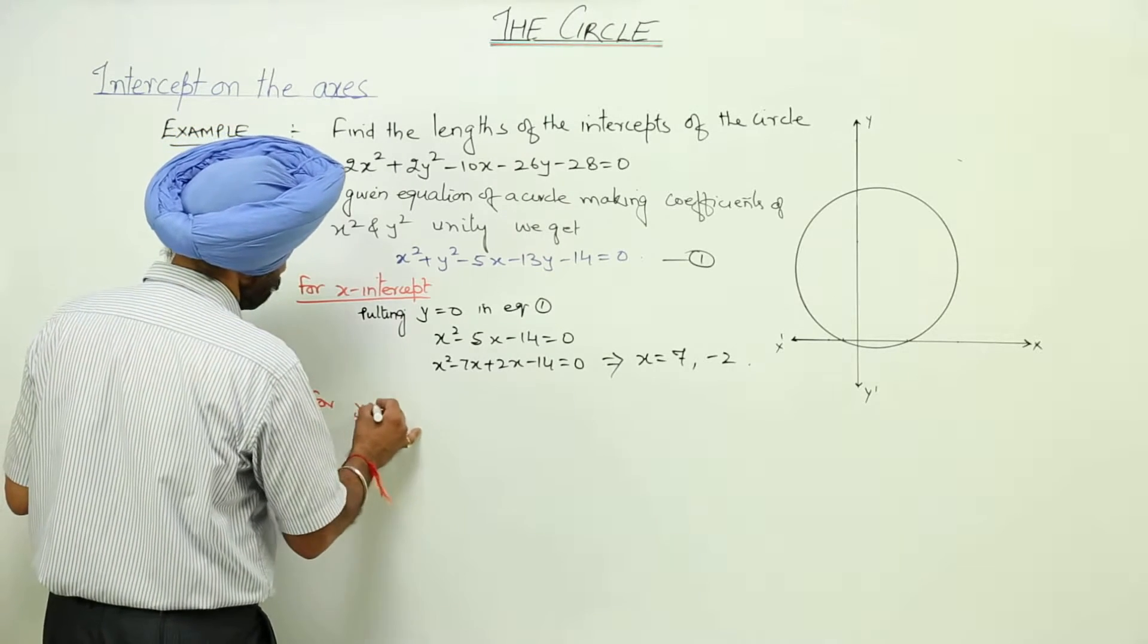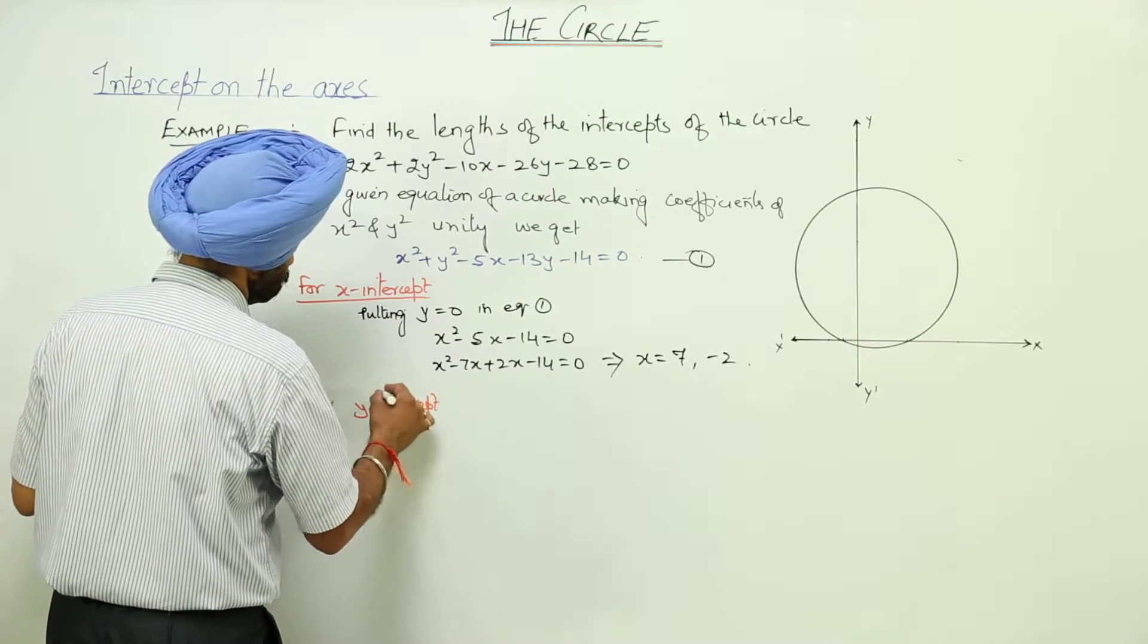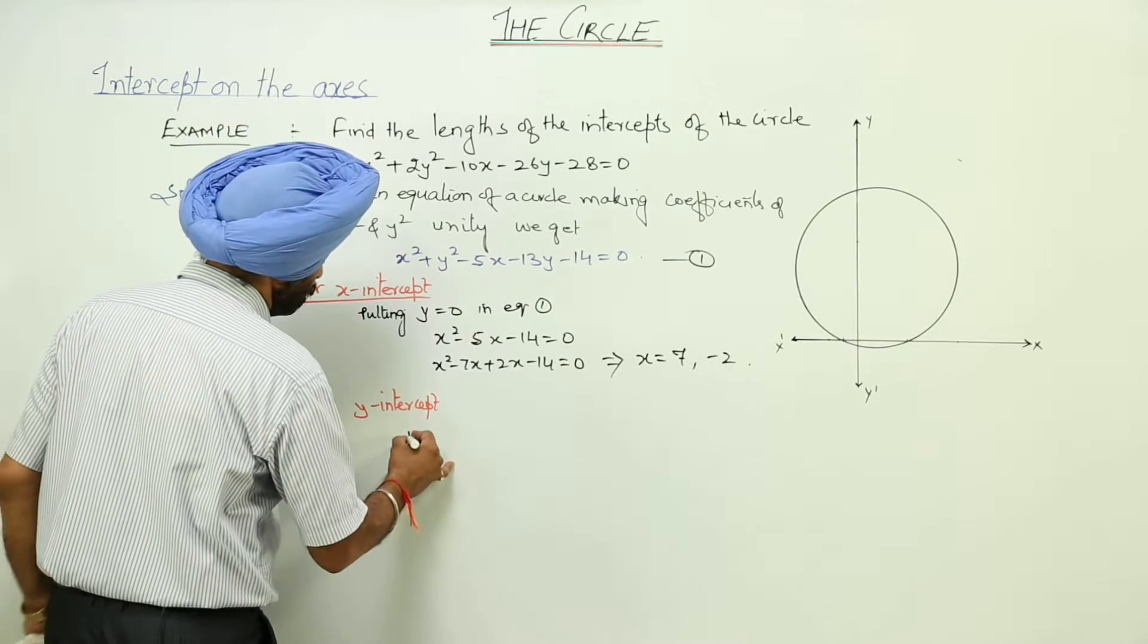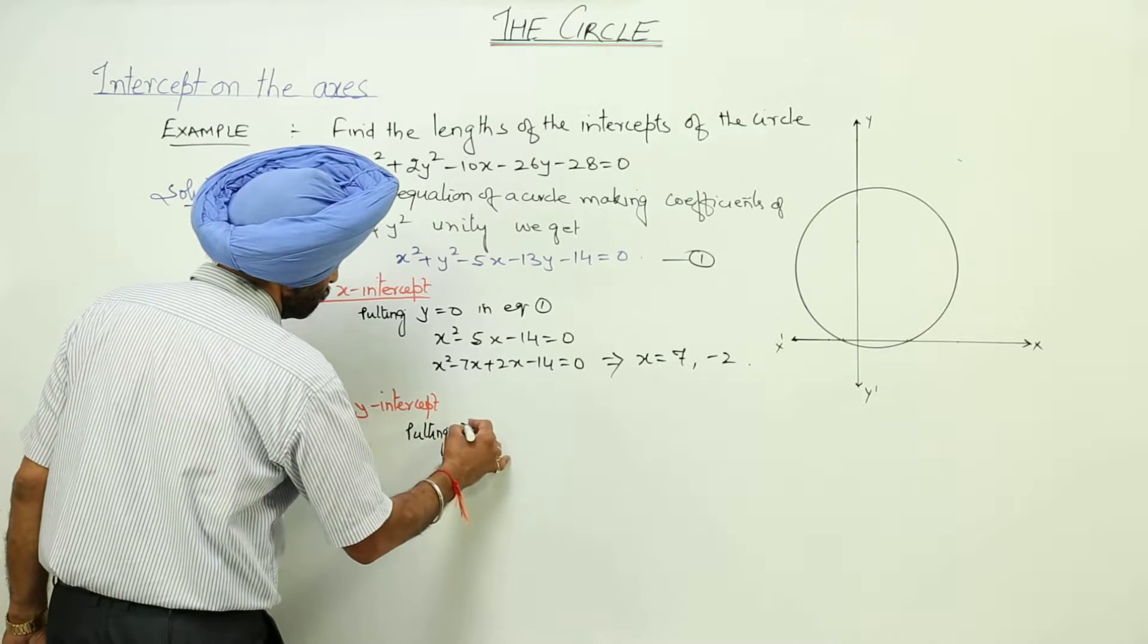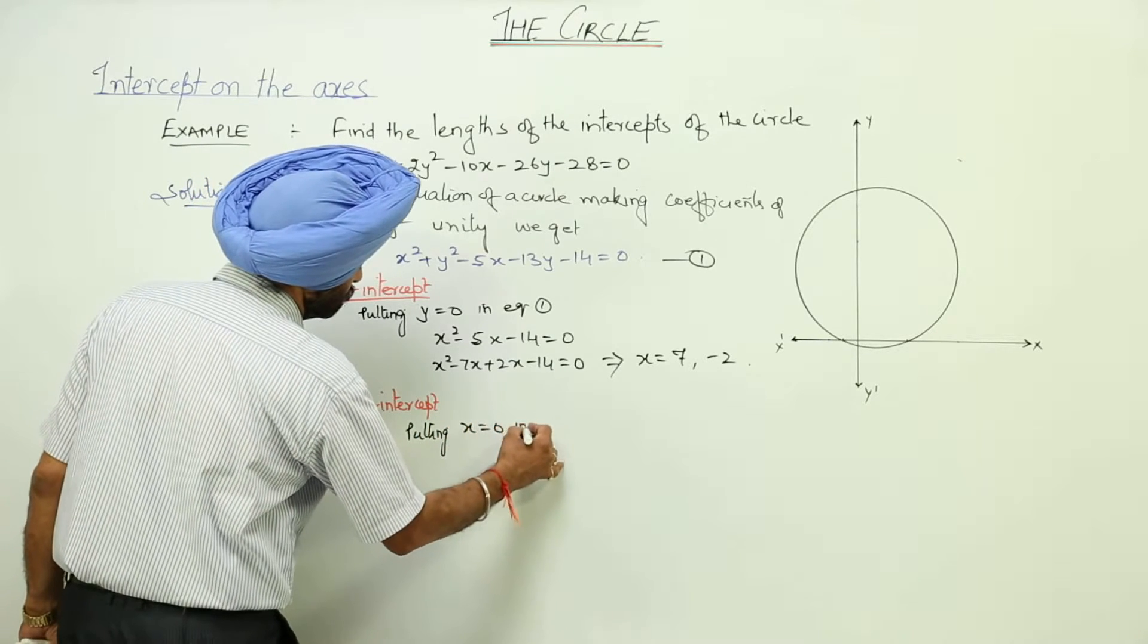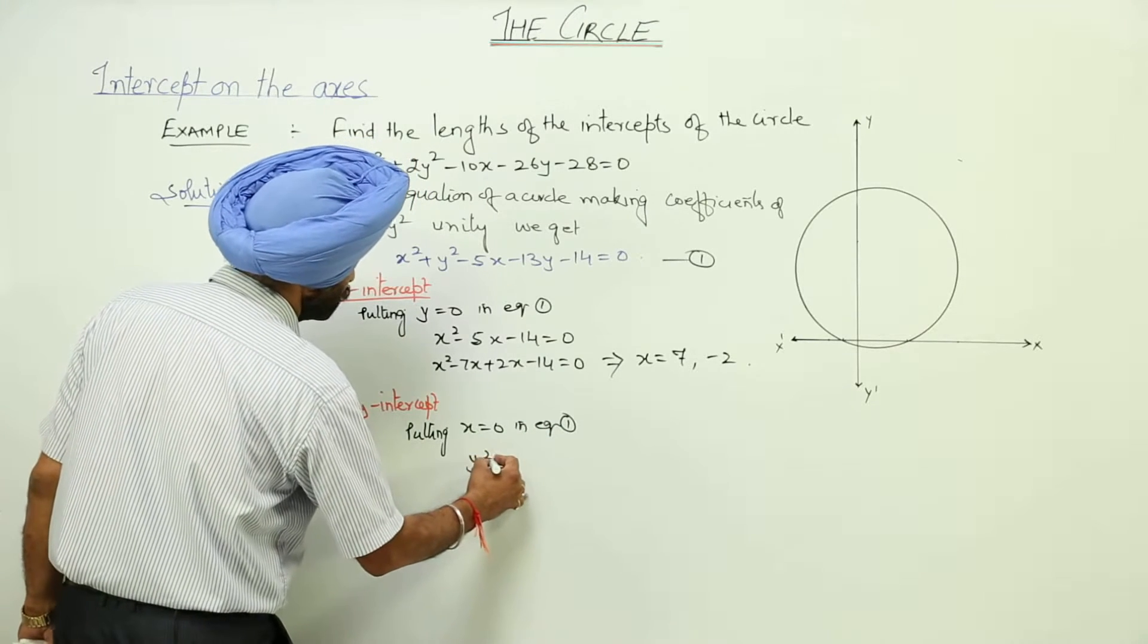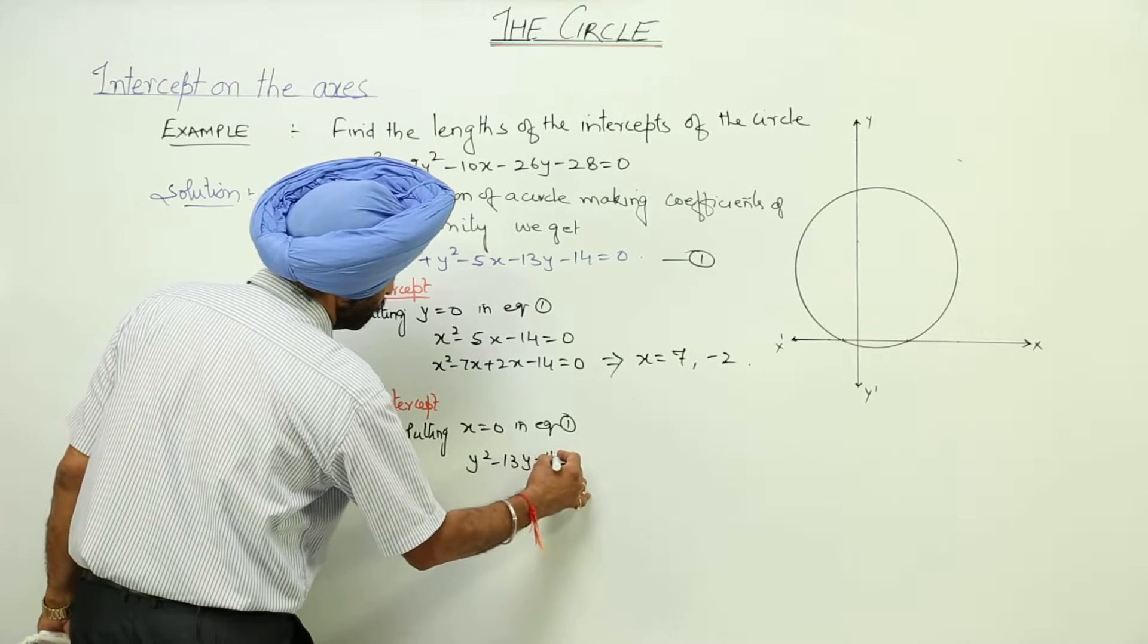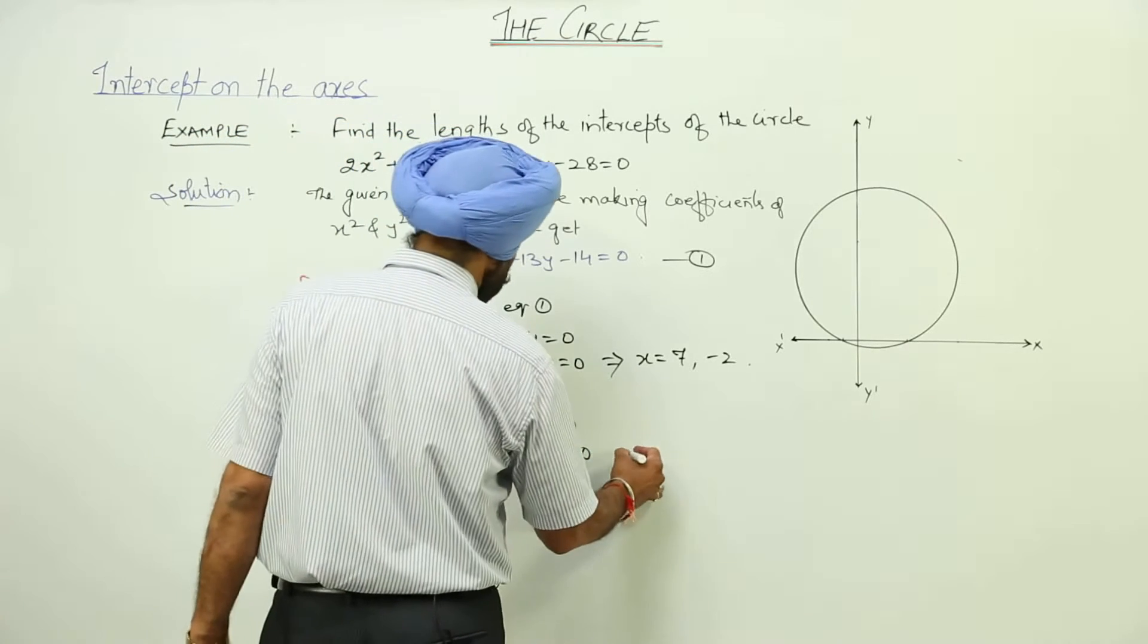For y intercepts, putting x is equal to 0 in equation 1, we get y square minus 13y minus 14 is equal to 0. And making factors, what we are getting?